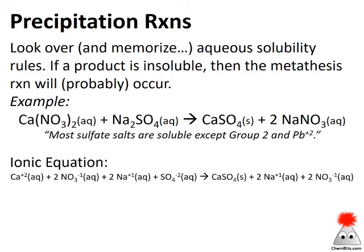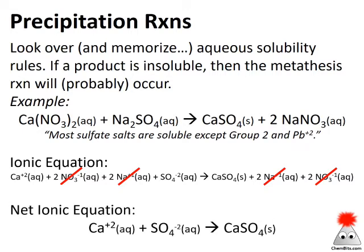Looking at the ionic version of this equation: calcium nitrate and sodium sulfate are both dissolved in aqueous solution, so we have calcium ions, nitrate ions, sodium ions, and sulfate ions. When they react, they form calcium sulfate solid — those are actually calcium sulfate units stuck together — while sodium nitrate is just dissolved sodium ions and nitrate ions. Crossing out the spectators that don't react, the net ionic equation is simply: Ca²⁺ + SO₄²⁻ → CaSO₄(s).